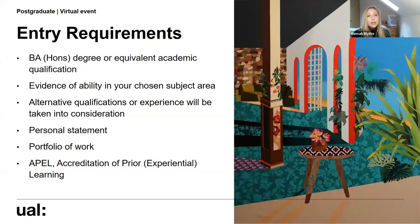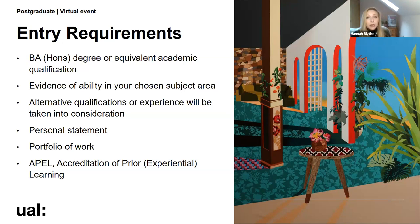In terms of entry requirements for our MA courses, we're looking for a BA degree or equivalent academic qualification. In your application you'll need to give evidence of your ability in your chosen subject area through your personal statement and digital portfolio. If you haven't come from a traditional academic background and have different qualifications, that's absolutely fine — we'll take that into consideration along with other relevant experience. You'll just need to detail that in your personal statement.